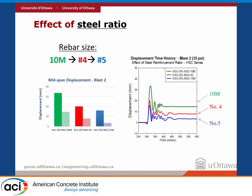The longitudinal steel ratio is an important parameter because the column is really acting in flexure. Going from 10M to No. 4 to No. 5 bars — increasing the bar size — the maximum displacements go down and residual displacements also go down, as expected. The idea of using high-strength steel is: can we get the behavior of a No. 5 Grade 400 MPa bar with maybe a smaller bar in high-strength steel?